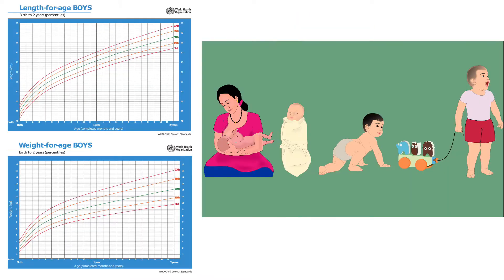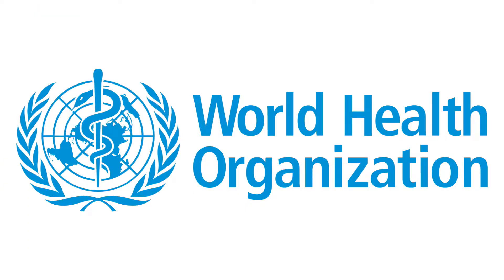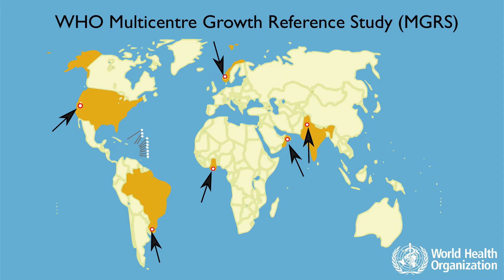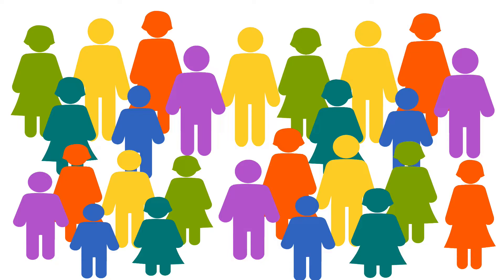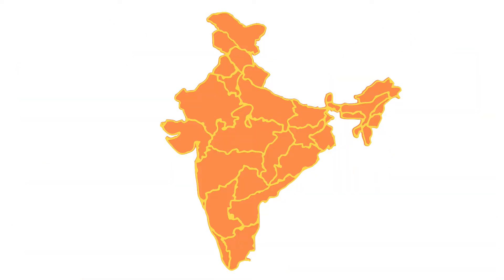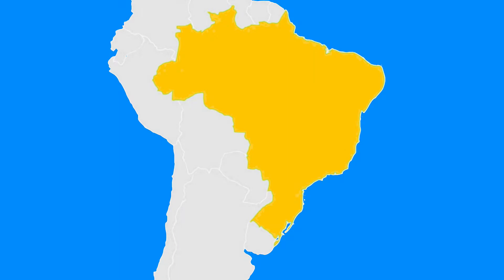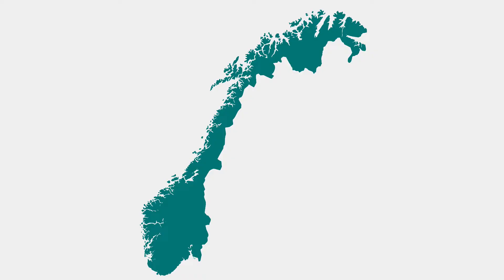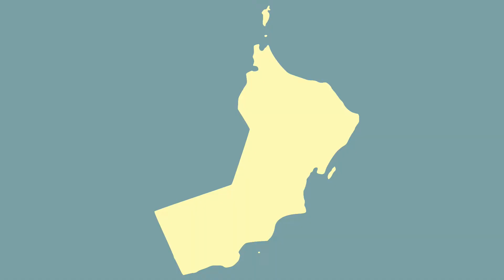Percentile growth charts are designed to help you follow a child's growth. They were developed through the World Health Organization's MGRS, which stands for Multicenter Growth Reference Study. In this study, 8,500 selected children from six different countries were measured: India, Brazil, Ghana, Norway, Oman, and the USA.